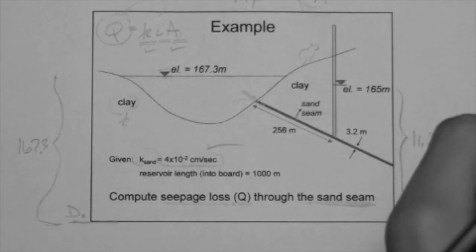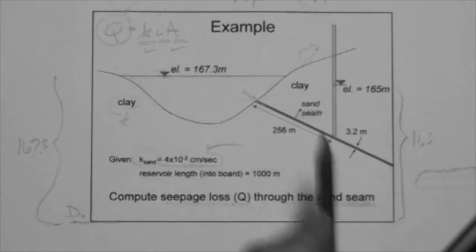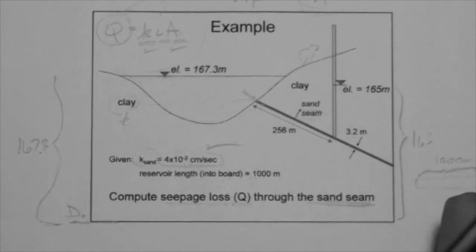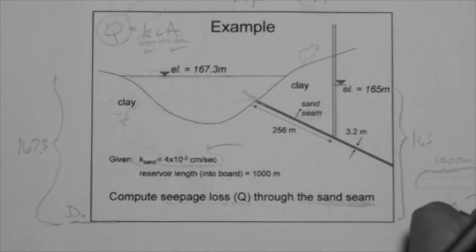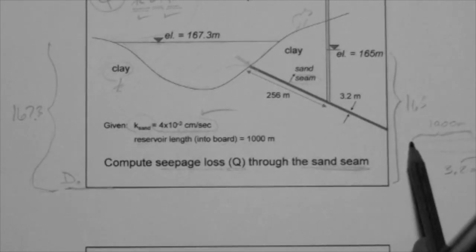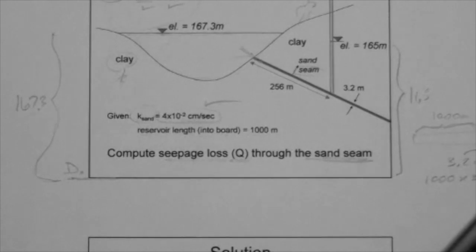I'm entering the seam like this. So what is this distance? Well, that is the distance into the side, so that's a thousand meters. What about that distance? That is the thickness of the seam, 3.2 meters. Clearly, this is not to scale. This is very, very thin and very long. But the area is a thousand times 3.2 meters squared.